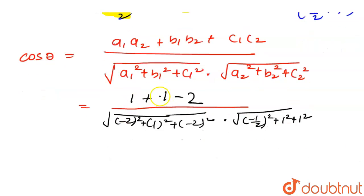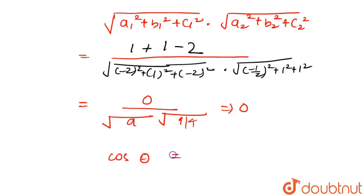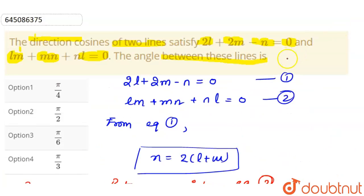The numerator becomes 1 + 1 − 2 = 0. The denominator is √(4 + 1 + 4) · √(1/4 + 1 + 1) = √9 · √(9/4) = 3 · (3/2). So cos θ = 0, which means θ = 90°. Therefore the two lines are perpendicular to each other.